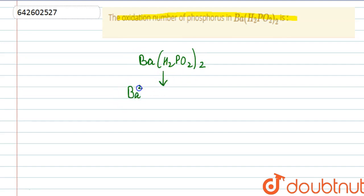If we study the structure of H2PO2-, it will be P double bond O, O-, H, and H. This will be the structure. Now we have to find the oxidation number of phosphorus in this.